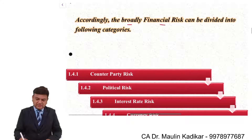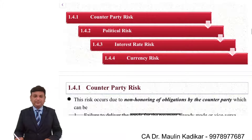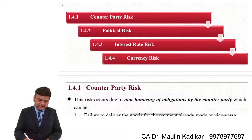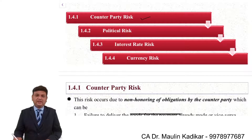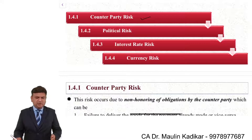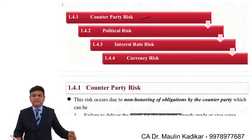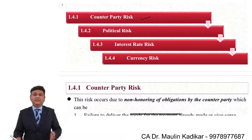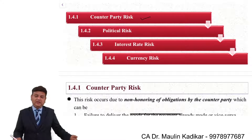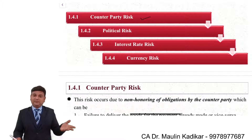The financial risk can be divided into categories. First is counterparty risk: for example, if you have made a prepayment to your supplier and the supplier is not delivering goods on time — that is counterparty risk. Similarly, as a bank giving loan to someone who is not making repayment — that is also counterparty risk. This risk also covers credit risk.